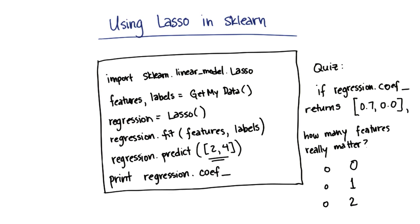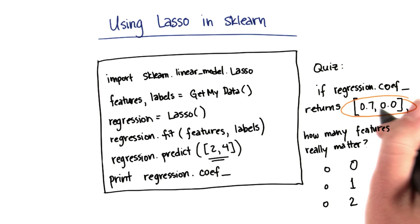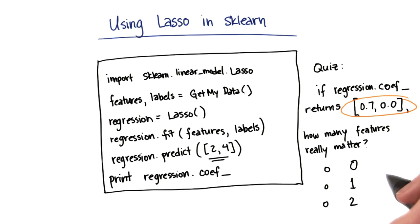So here's your last quiz, and that is how to interpret the coefficients. So suppose I call this print regression coefficients command. That's going to return a list of the coefficients on the different features. And let's suppose the list that it returns has two elements in it. One has a value of 0.7, the other has a value of 0. In this situation, how many features would you say are really mattering in the regression, how many features are really important?